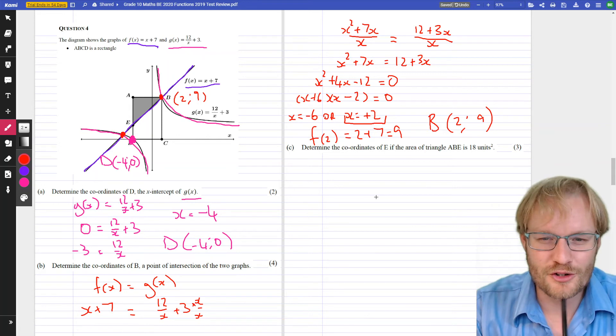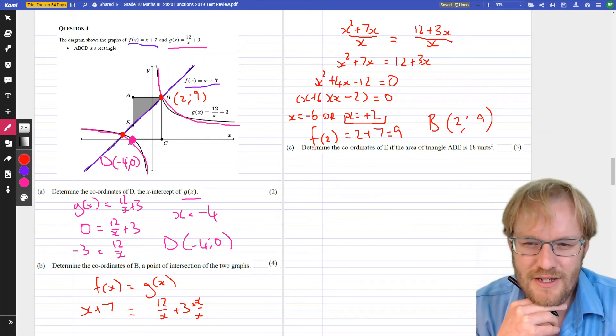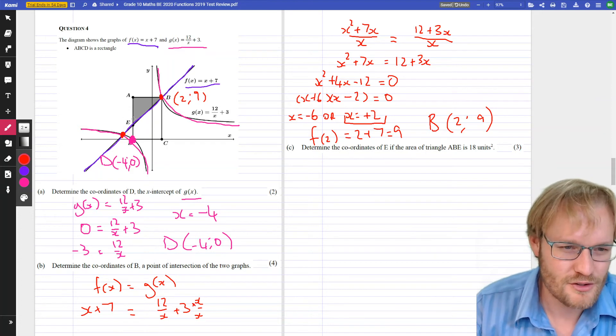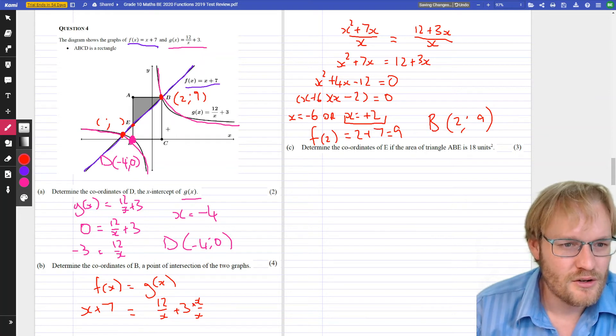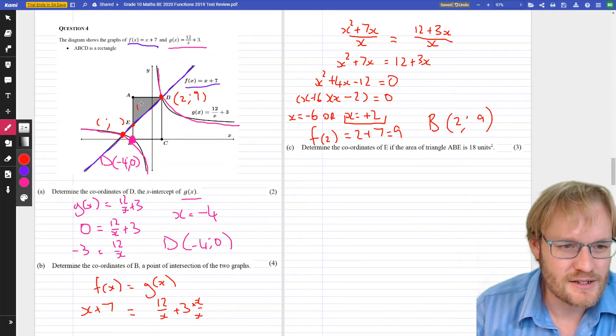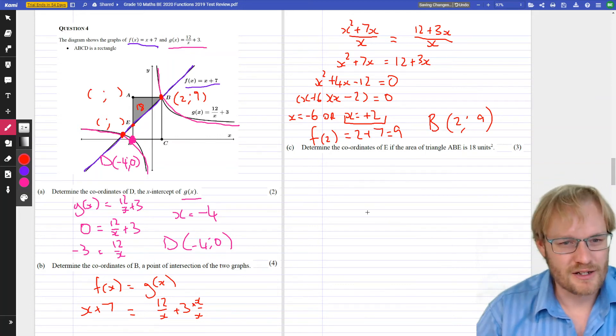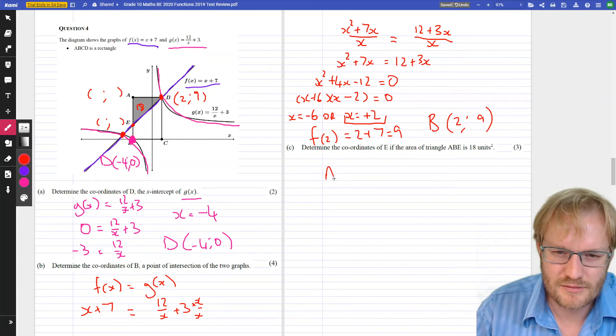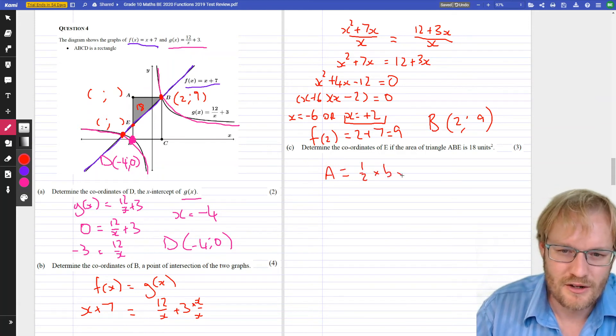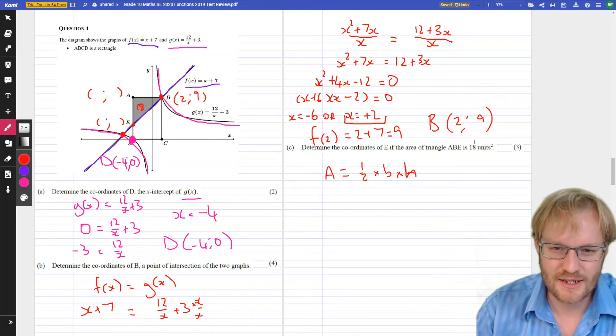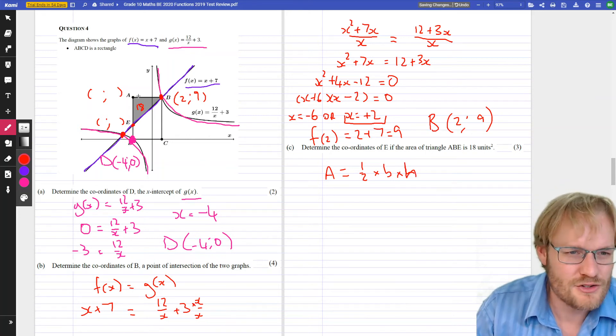Last question. Determine the coordinates of E if the area of the triangle ABE is 18 units squared. So, we're trying to work out what this is, its coordinates. And we know that this area is 18 square units. We've got B. We don't know anything about E. We don't seem to know anything about A. It makes sense to me that we're going to use area of a triangle somewhere. Half base times height. Let's choose AB as our base. So, this is our base. Therefore, this must be our height. This is a right angle, because it's a rectangle.